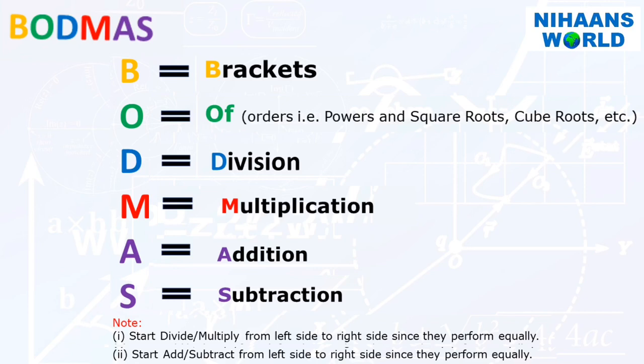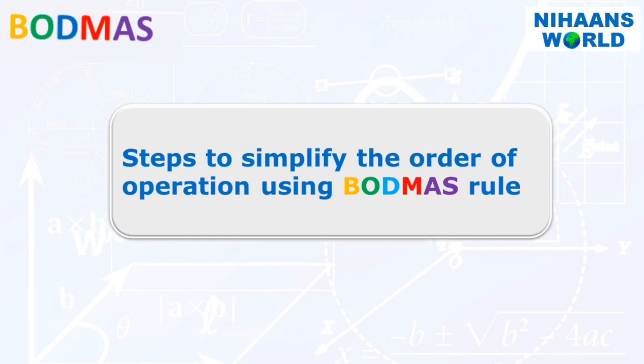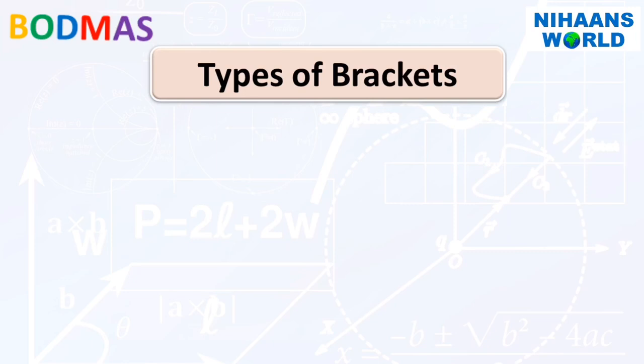Steps to simplify the order of operation using BODMAS rule. There are 4 types of brackets. When we simplify any expression involving the use of more than one bracket, we remove them in the following order. That is, bar first, common bracket second, curly bracket third, and square bracket fourth.